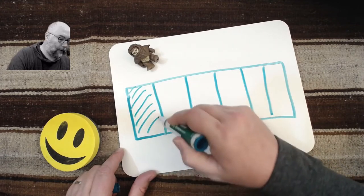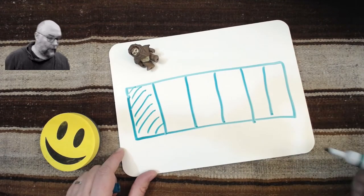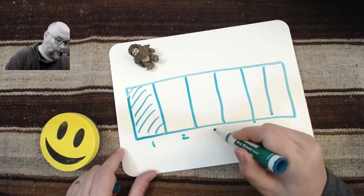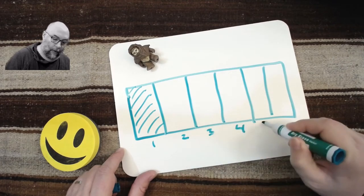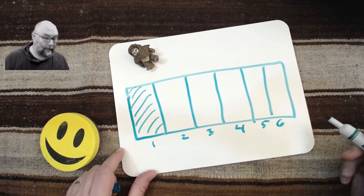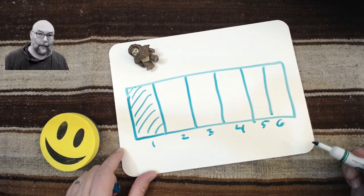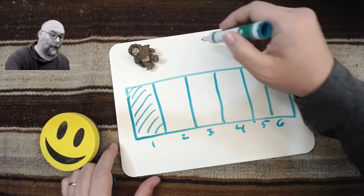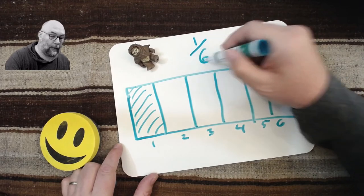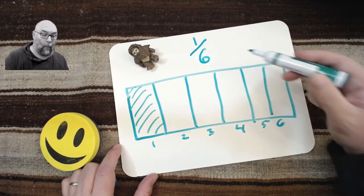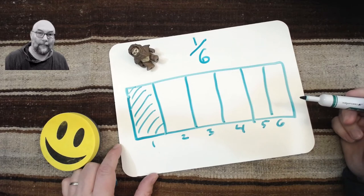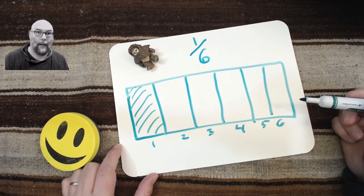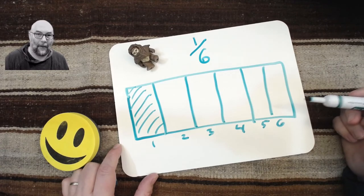All right. So, and we have one, two, three, four, five, six pieces. So how much did he eat? He ate one out of six pieces, or one-sixth. That's hard to say. One-sixth. All right.